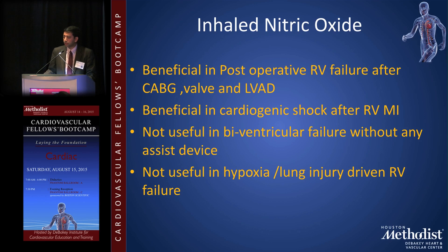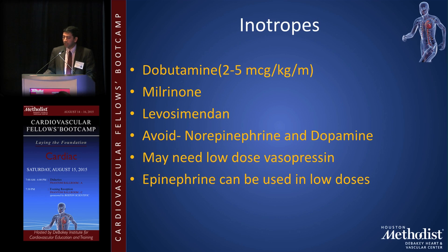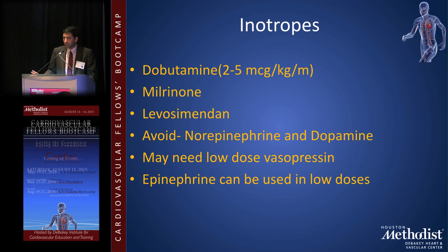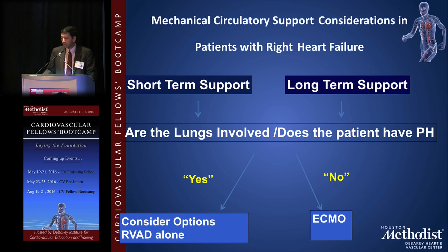The two main inotropes used are dobutamine and milrinone. If dealing with high PVR, milrinone is preferable; for intrinsic RV dysfunction, dobutamine is preferred. Vasopressors should be avoided — particularly norepinephrine and dopamine, which have pulmonary vasoconstrictive effects. If a vasopressor is needed, use vasopressin instead.